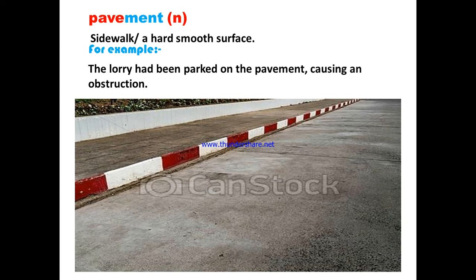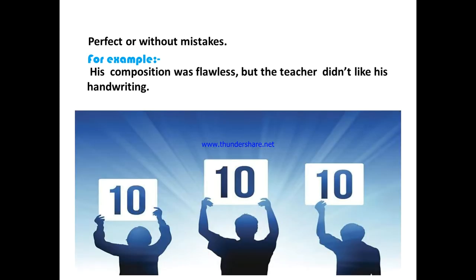'Pavement' — it's a noun, a sidewalk or hard smooth surface safe to walk on. For example, the lorry had been parked on the pavement causing an obstruction. 'Flawless' — it's an adjective meaning perfect or without mistakes. For example, this composition was flawless.